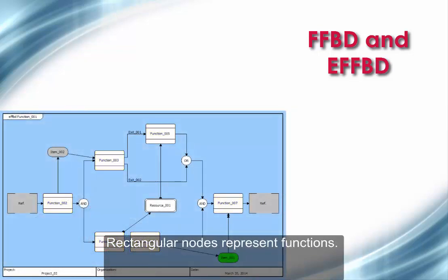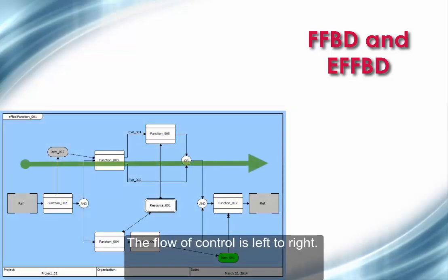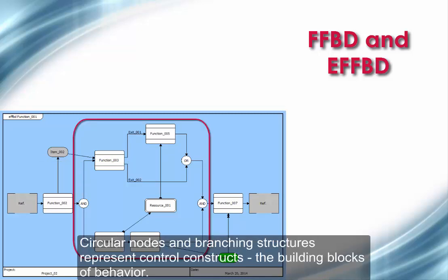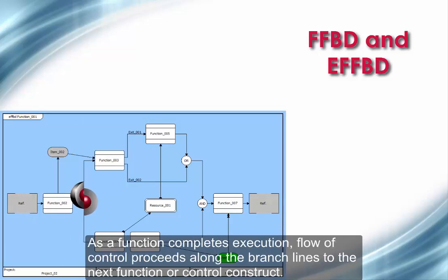Rectangular nodes represent functions. The flow of control is left to right. Circular nodes and branching structures represent control constructs, the building blocks of behavior. As a function completes execution, flow of control proceeds along the branch lines to the next function or control construct.